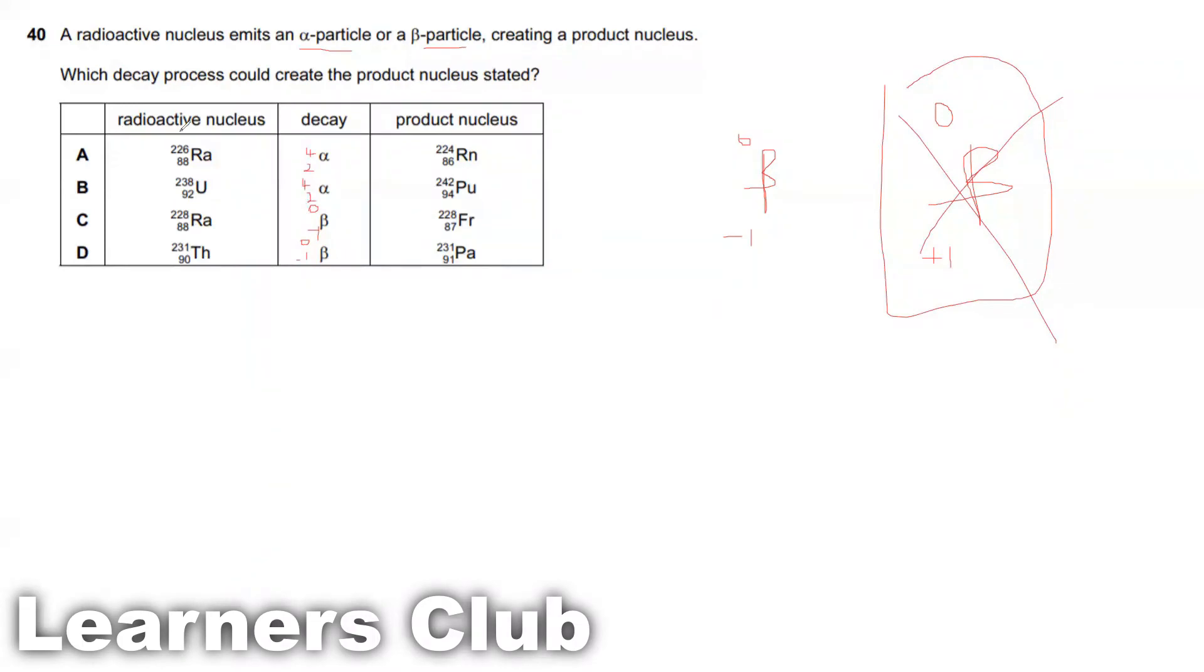Alpha particle 4 nuclear number with plus 2 charge. Now we need to see which decay process could create the product nucleus. To do this we just have to add the decay with the product nucleus to see whether we get the parent nucleus. So 224 plus 4 should be 228. Because this should give alpha plus the daughter nucleus. But this is 226 but it should be 228. So this is not the option.